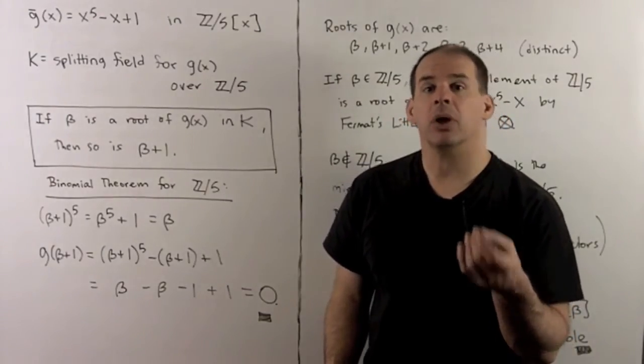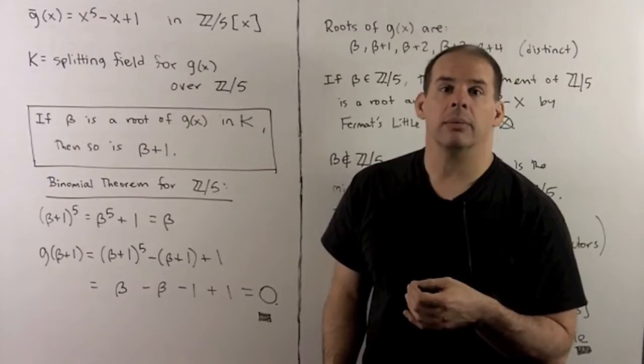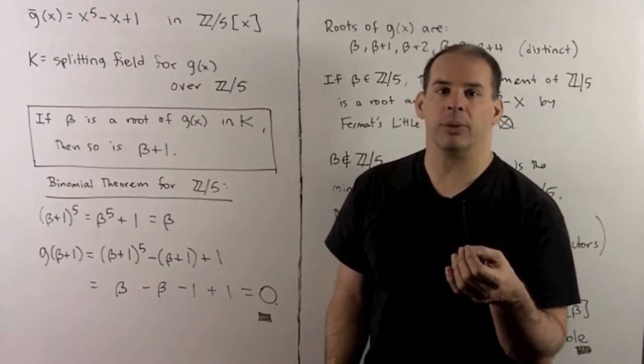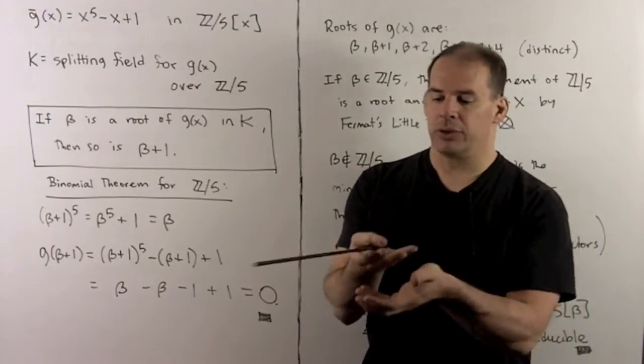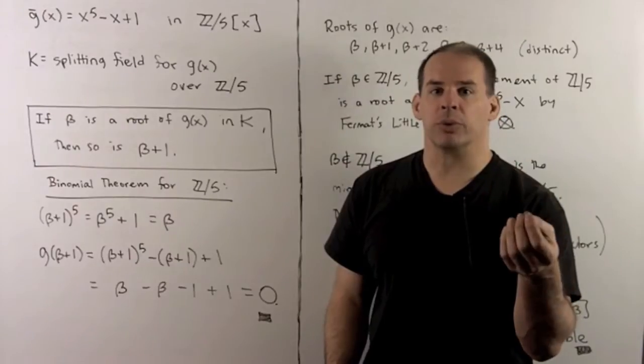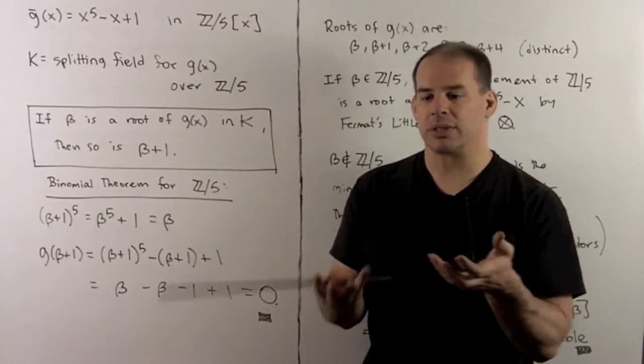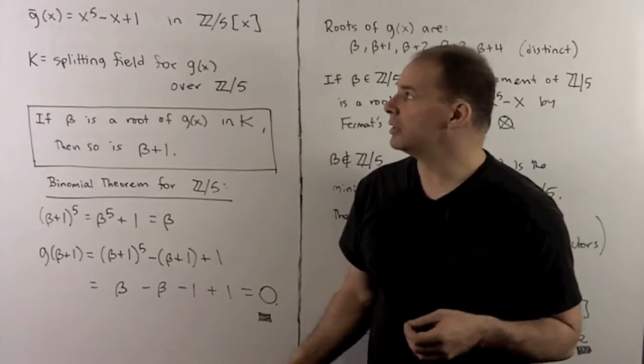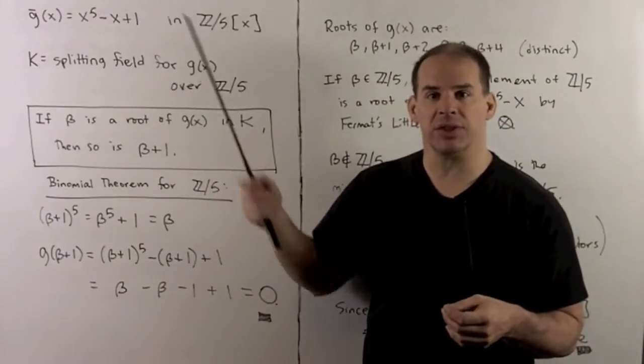From here, we have options. One way is brute force. Because we're working over a finite field, there are only finitely many irreducible polynomials of a given degree. So we could start with degree one, take all possible products. They'll give the reducibles of degree two. What's left over are the irreducibles of degree two. Then we just work our way up to degree five. And then we see that this is irreducible.